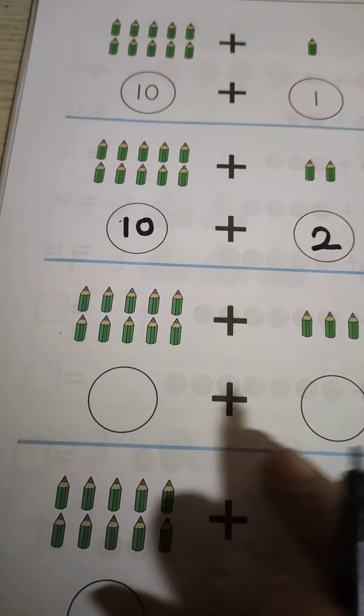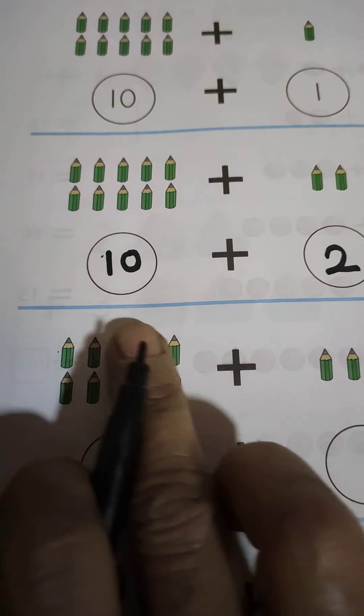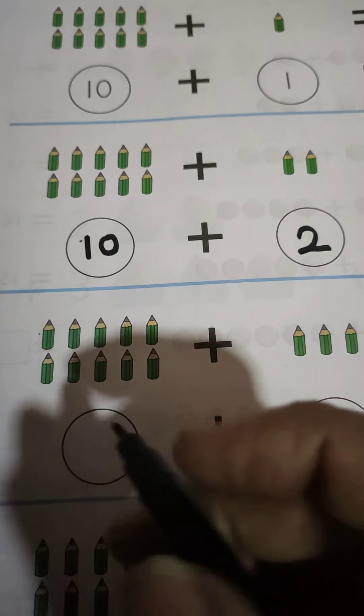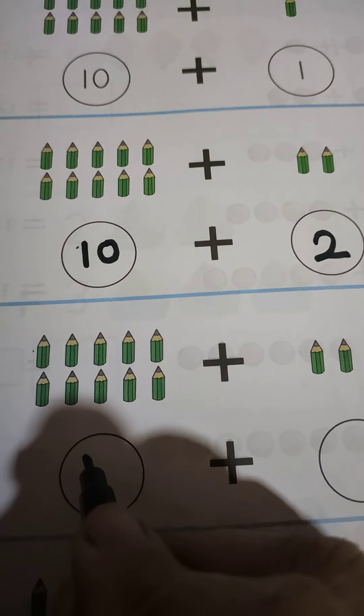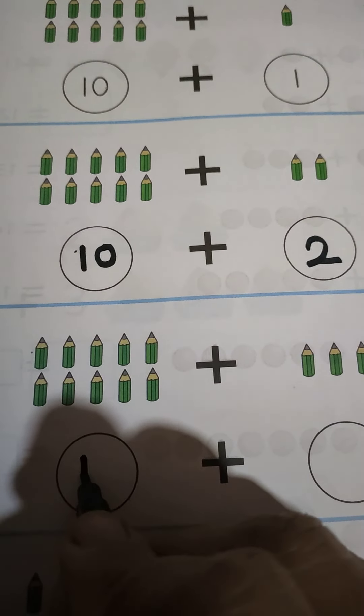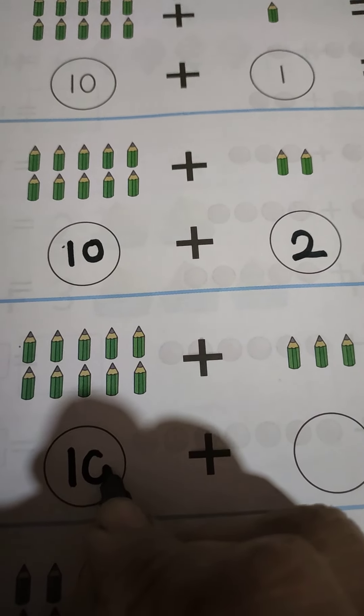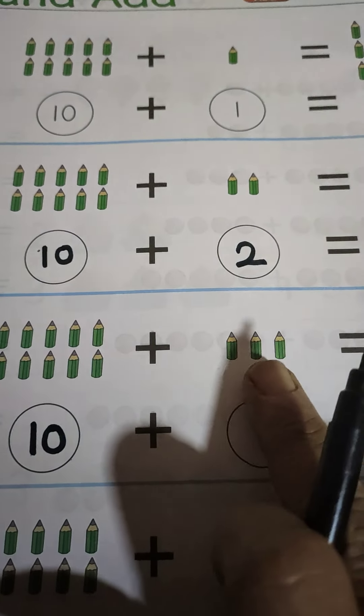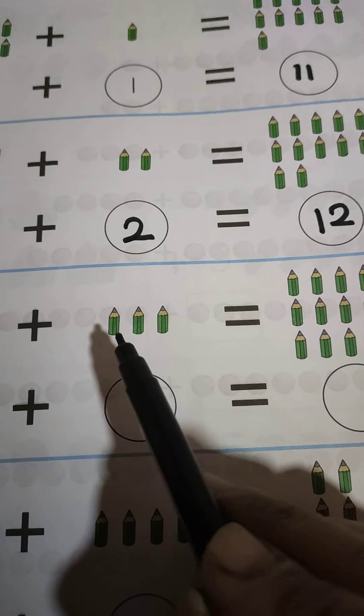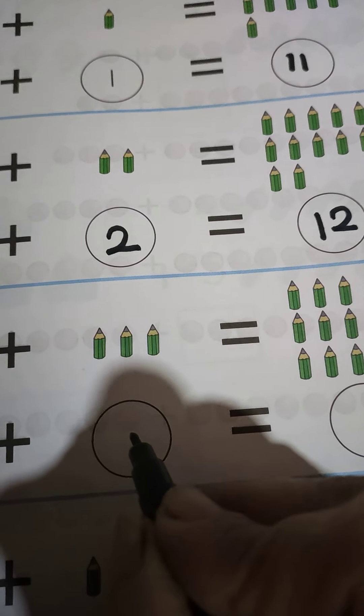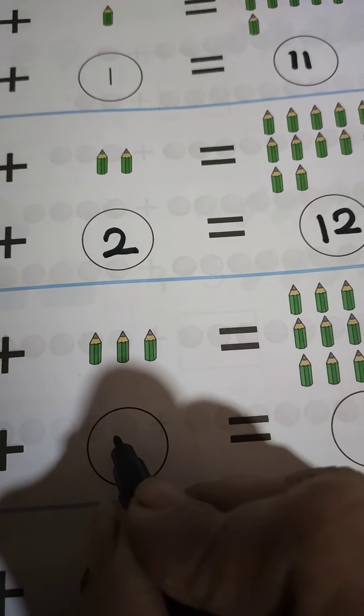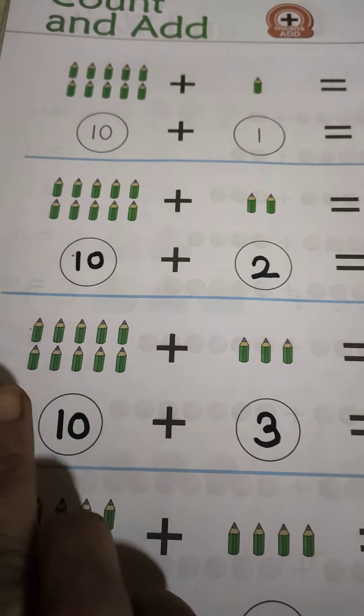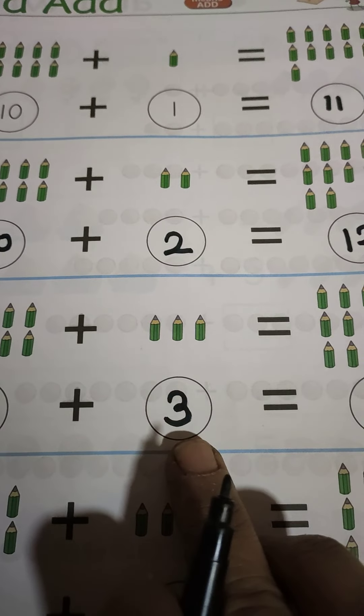Our next example. See. Here, how many pencils? Set of 10 pencils. So first we'll write over here 10. Now 10 plus here how many? 1, 2, 3. So write over here 10 plus 3.